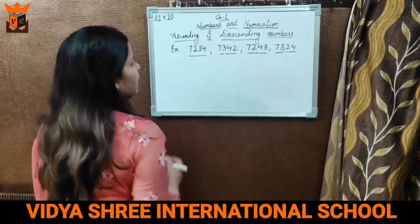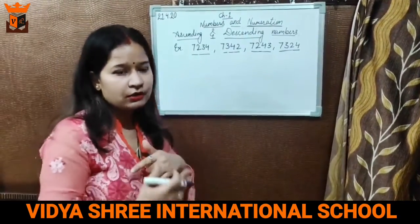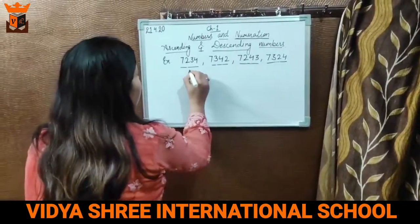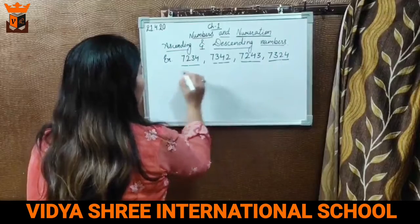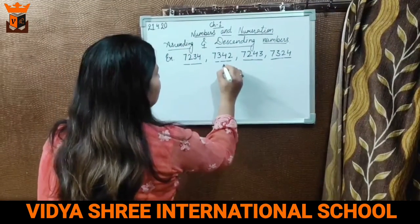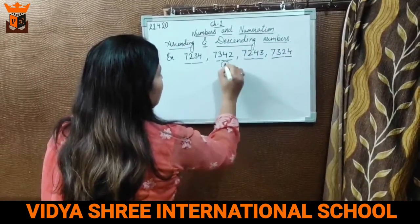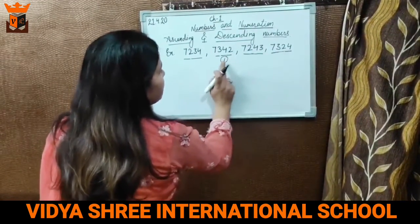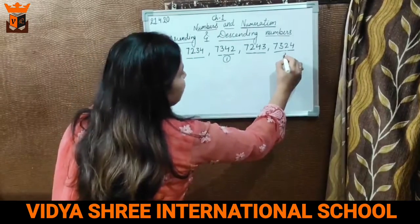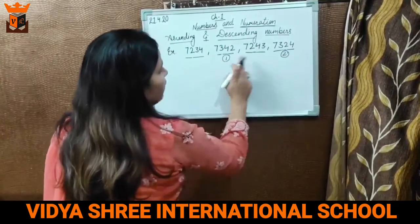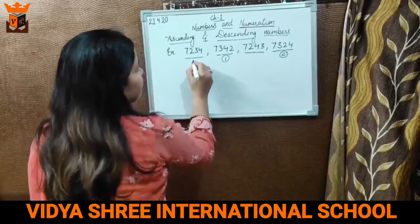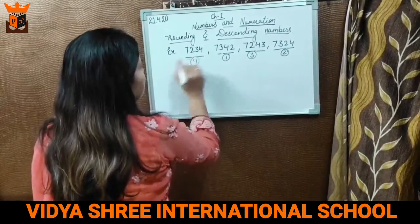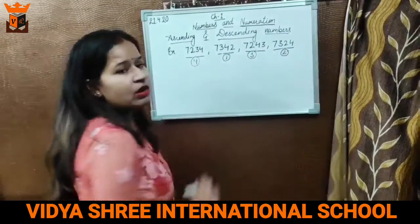Now firstly we will see again which is the biggest number, because we are going to arrange these numbers in descending order. As you can see, 7342 is the greatest one and 7234 is the smallest one. So this one is the greatest. Then the second number is smaller than this, then the third number is smaller than that, and the fourth number is the smallest number among all.